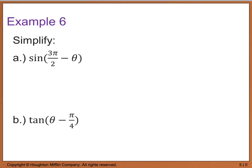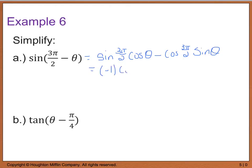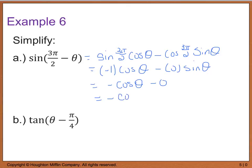Example 6 is similar to example 5. We simplify sine of 3pi over 2 minus theta. Applying the difference formula, we get sine of 3pi over 2 times cosine of theta minus cosine of 3pi over 2 times sine of theta. Simplifying, that's negative 1 times cosine theta minus 0 times sine theta, which gives us negative cosine theta.